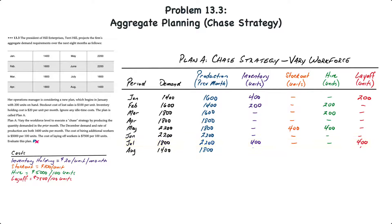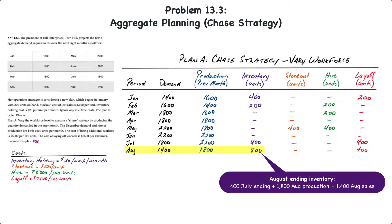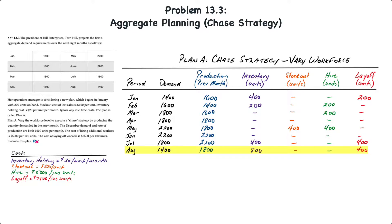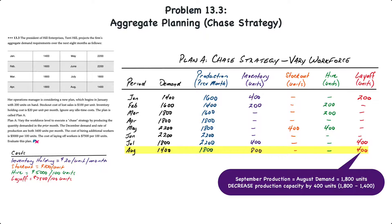In August, 1,800 units are produced but demand is only 1,400 units. That results in 800 units in ending inventory: 400 units carried over from July, plus 1,800 produced, minus 1,400 sold — 800 units, with no stockouts. For September, production will decrease from 1,800 units to 1,400 units to match August's demand, resulting in another 400-unit reduction — four more layoffs.